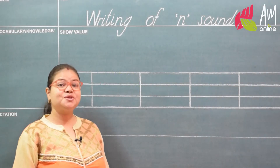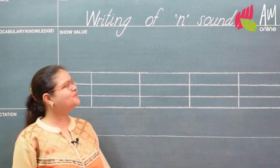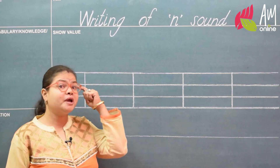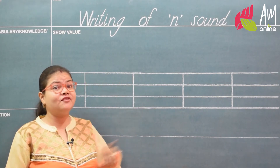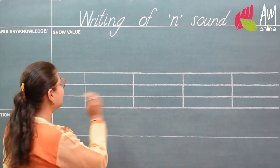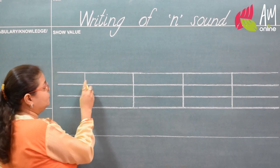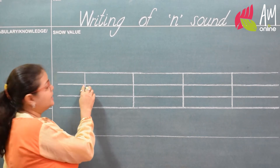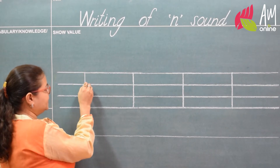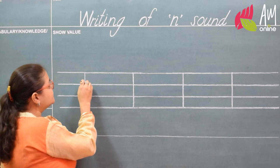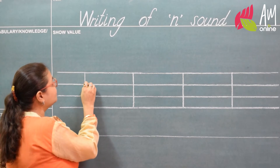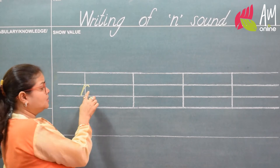Good morning children, today we are going to learn how to write the na sound. For writing na, we have to remember the formation of the ra sound we learned in our previous session. We have to start our na sound from the first middle line, exactly at the point where the standing line is meeting our first middle line. Middle start, slant down, go up, make a roof — this is our ra sound.